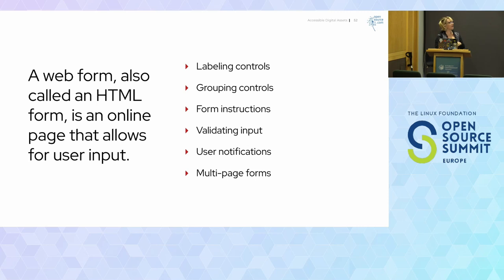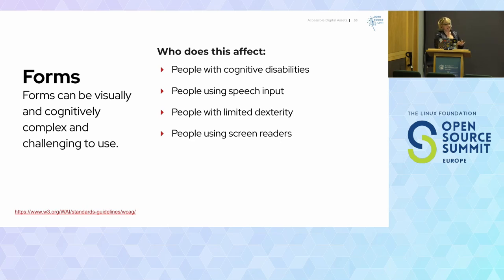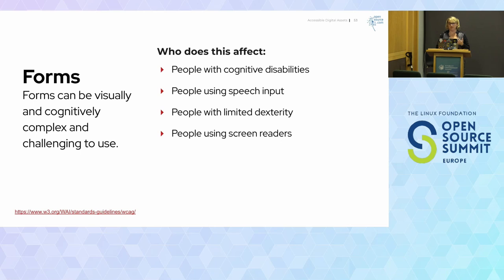Wherever possible, divide long forms into multiple-page forms that constitute a series of logical steps. It's a lot easier to get through three pages of six questions than 18 questions on one page. Forms can be really challenging for people who are visually or cognitively challenged, or for someone with attention deficits. Accessible forms are easier for everyone — people with cognitive disabilities can better understand the form, make fewer mistakes, and provide better feedback.